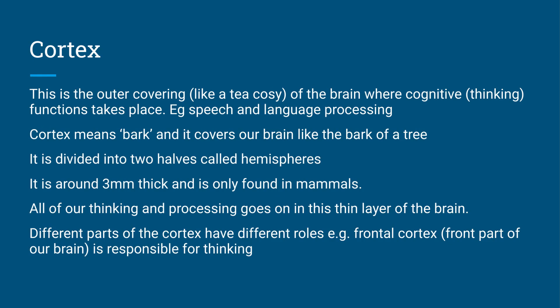And then we've got different parts of our cortex and they all have different roles. So for example, the frontal cortex, this part right at the front of your brain, is responsible for thinking. And this really is the last part of the brain to fully mature and develop after your adolescent years.